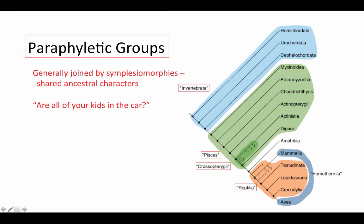Reptiles are another example. There's a common ancestor of everything we would call reptiles, but birds are left out. So these are paraphyletic groups — not all the kids are in the car — and again, they're generally joined together by shared ancestral characters rather than evolutionary novelties or new characters.